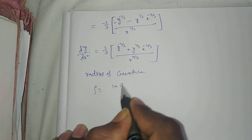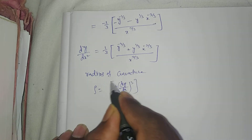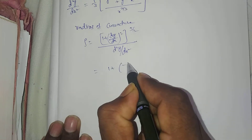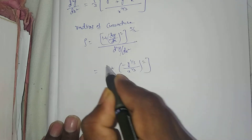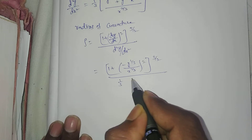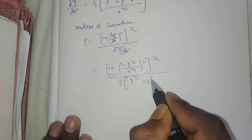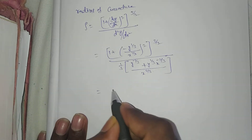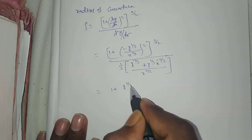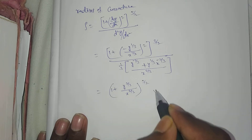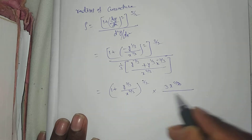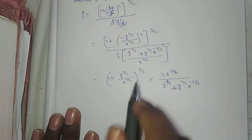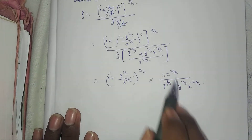Radius of curvature ρ = [1 + (dy/dx)²]^(3/2) / |d²y/dx²|. Substituting dy/dx = -y^(1/3)/x^(1/3): numerator becomes [1 + y^(2/3)/x^(2/3)]^(3/2). Denominator is (1/3)[y^(-1/3) + y^(1/3)·x^(-2/3)] / x^(2/3).